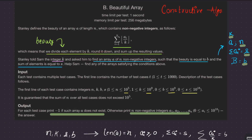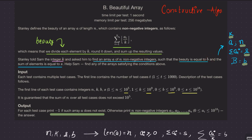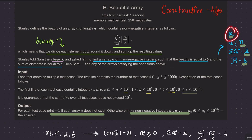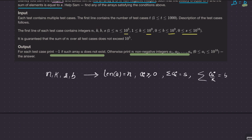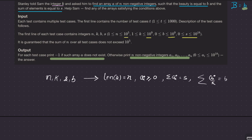Given an integer k, we want to find an array A of n non-negative integers — non-negative means greater than or equal to 0 — such that the beauty equals B and the sum of elements equals S. We have to find any array satisfying the above conditions. If you look at the constraints, they are pretty high, like 1e9 and 1e18, so of course use long long here.